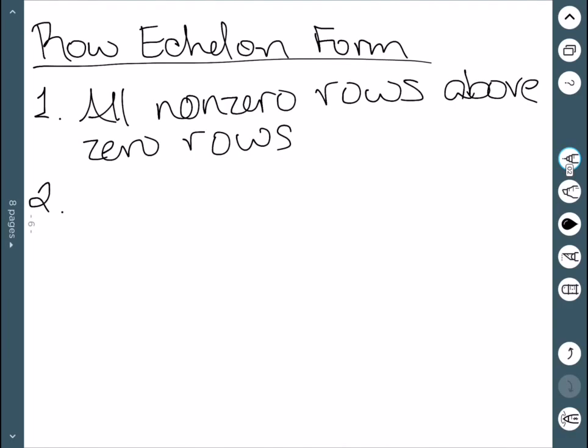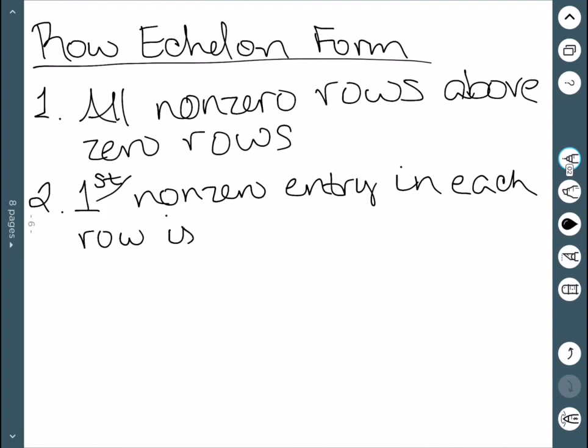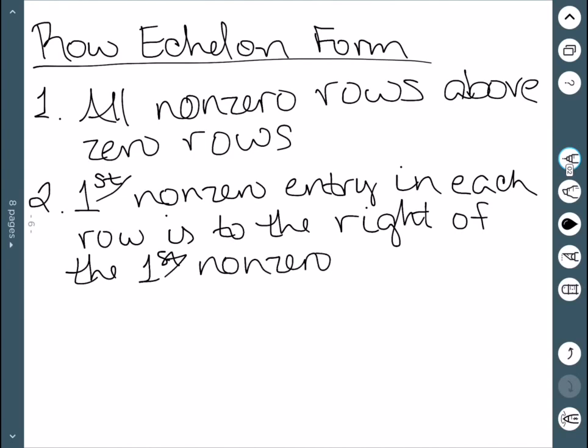The second one: the first non-zero entry in each row should be to the right of the non-zero entry of the row above it.